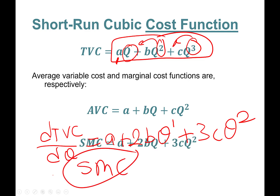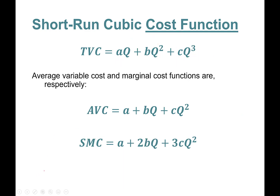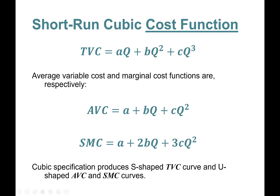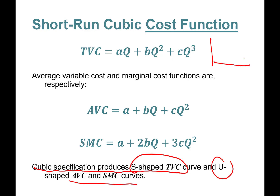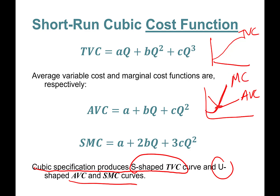The cubic specification produces a nice S-shaped total variable cost curve, and U-shaped average variable cost and marginal cost curves. Marginal cost is also U-shaped, passing through the lowest point of the average variable cost curve.